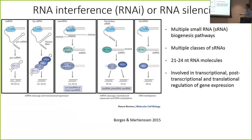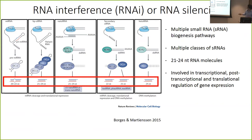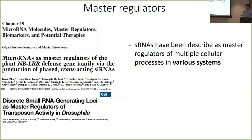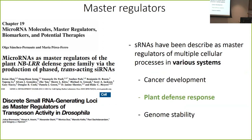RNA interference, RNAi or RNA silencing, refers to multiple biogenesis pathways that lead to the production of small RNAs — molecules of 21 to 24 nucleotides long — that are involved in transcriptional, translational, or post-transcriptional regulation. They're quite important. People like to call them master regulators, and their activity has been described in multiple cellular systems and processes. Examples show microRNAs referred to as master regulators in humans, plants, and drosophila, related to regulation in cancer development. For our cases, plant defense response and genome stability are particularly important.